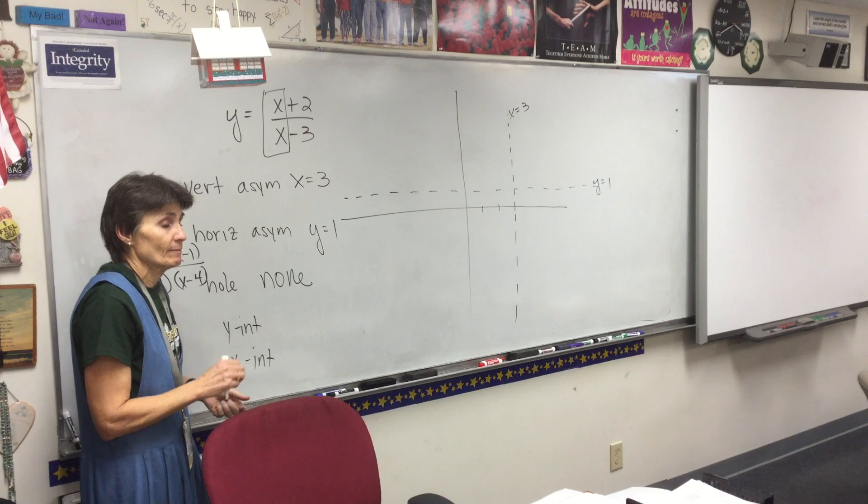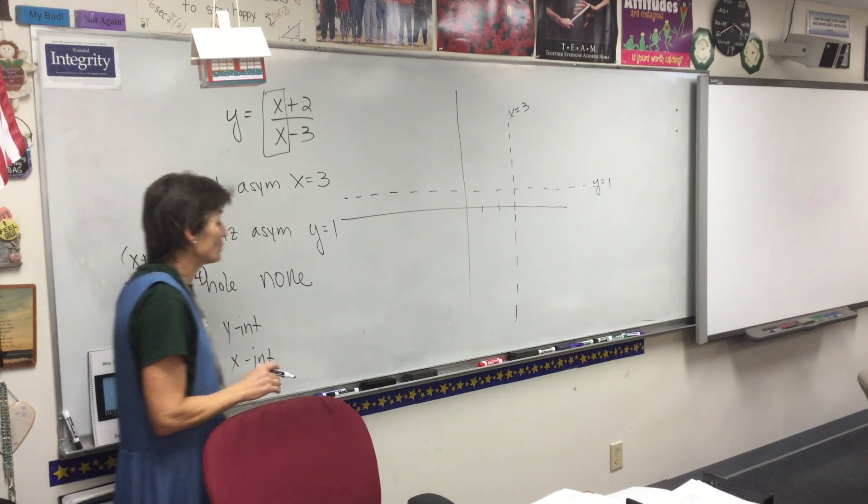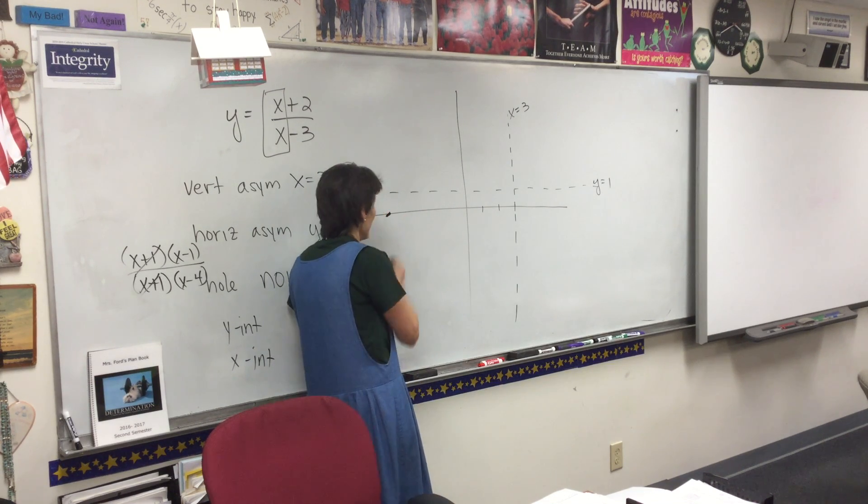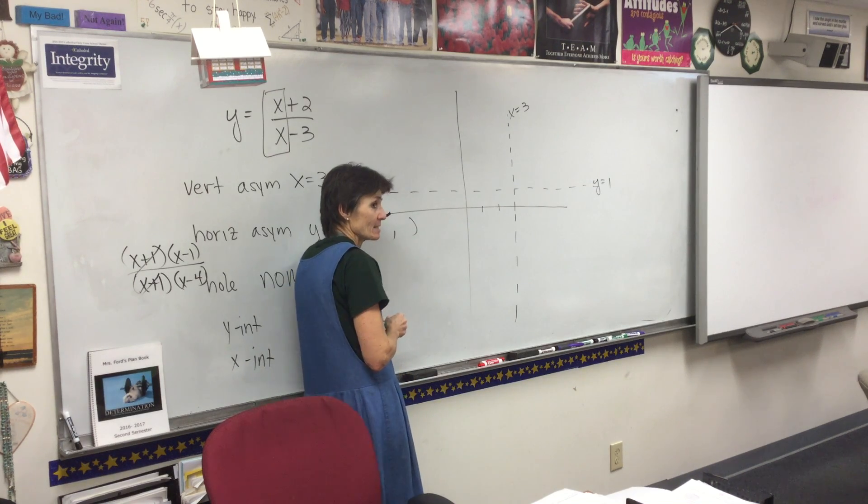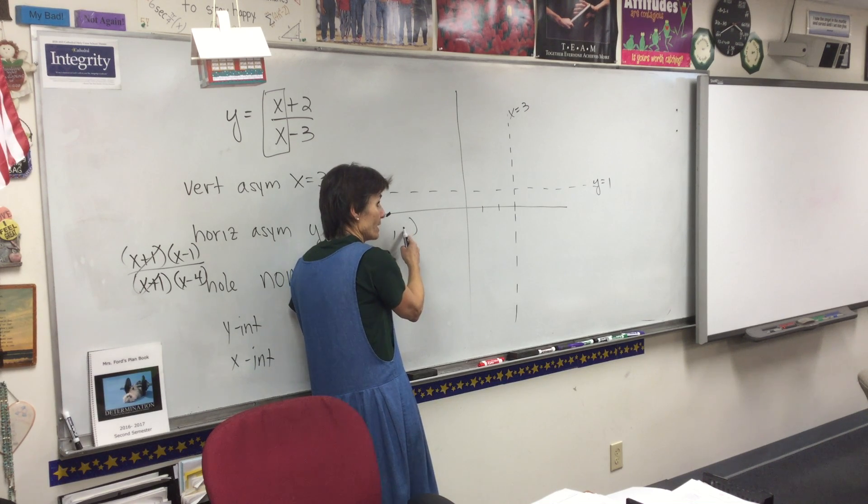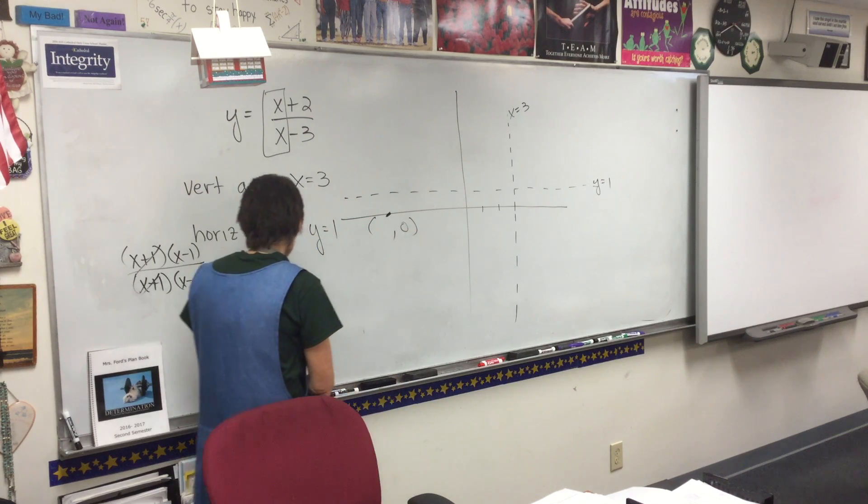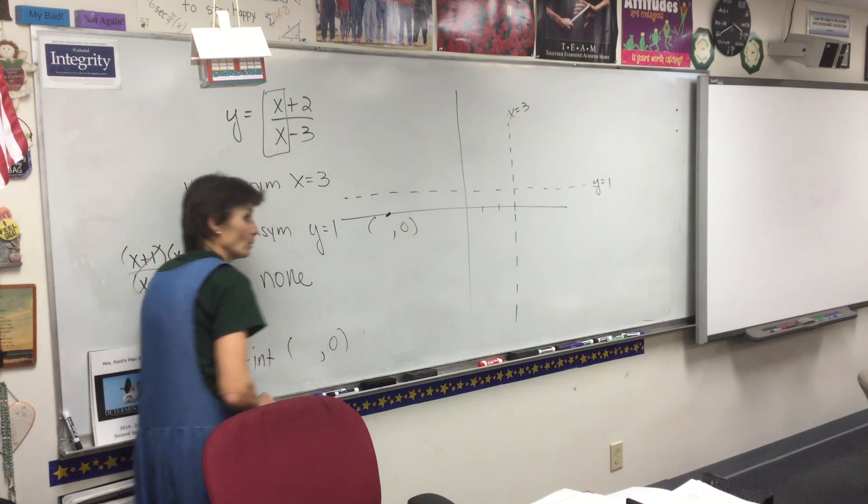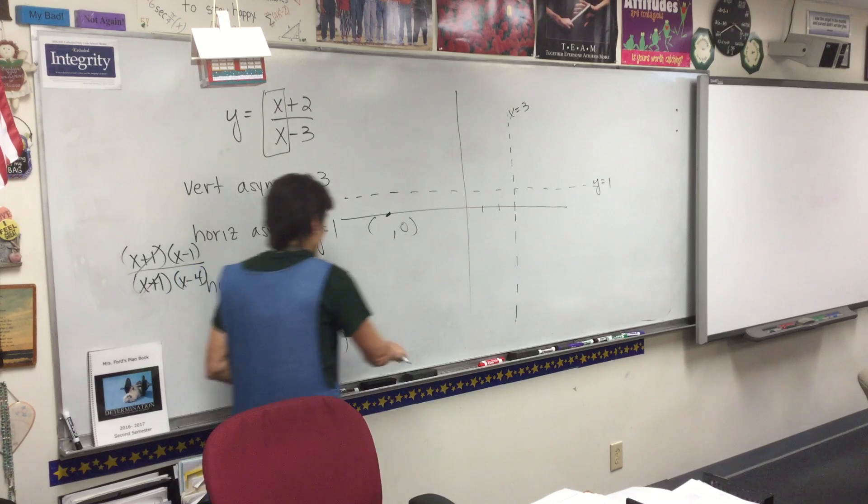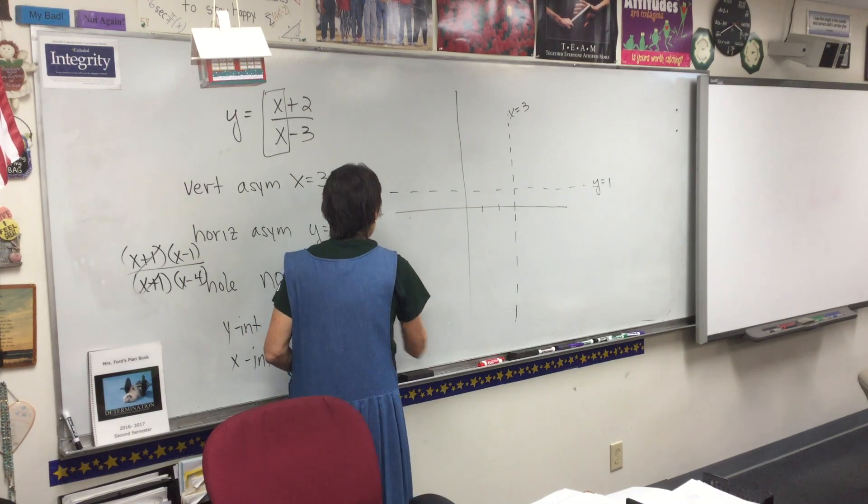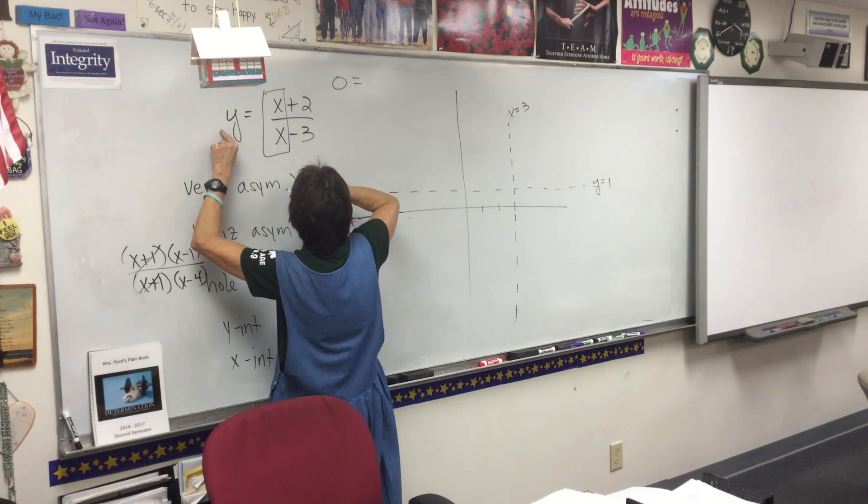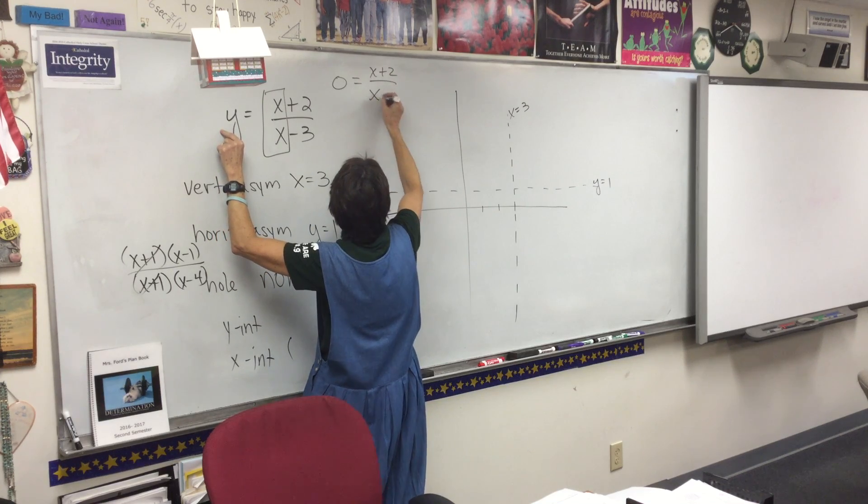Now, intercepts are easy. You've known about intercepts your whole life. If we're talking about an x-intercept, aren't we talking about a point on the x-axis? And what do we know about any point on the x-axis? I don't know what x is, but I know y is zero. So to get my x-intercept, I am going to let y be zero. So go back to your equation. Go back to your equation and let y be zero.